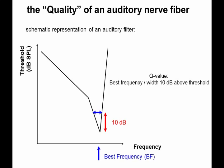Why is it called quality? Because the higher the quality, the narrower the filter. Narrow filters are good because they can select certain frequencies — though I don't say good in the general sense, because there is no such thing as an absolute optimum. The thinnest possible filters are not necessarily optimal.